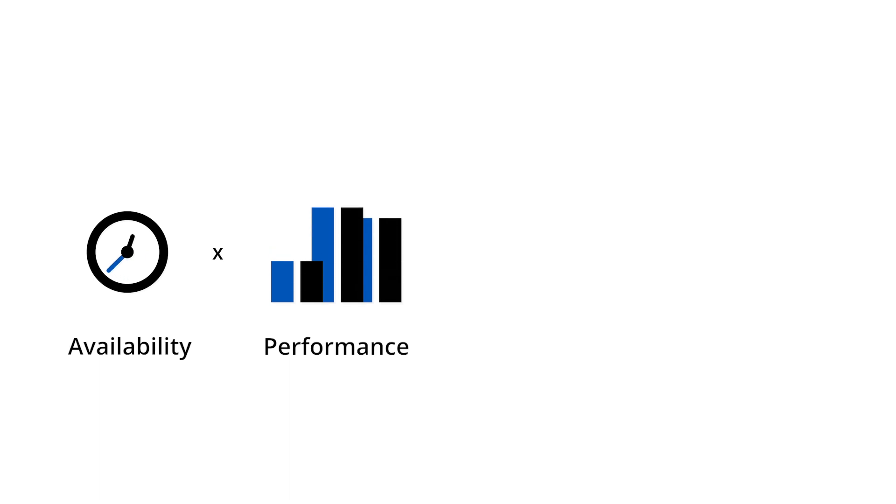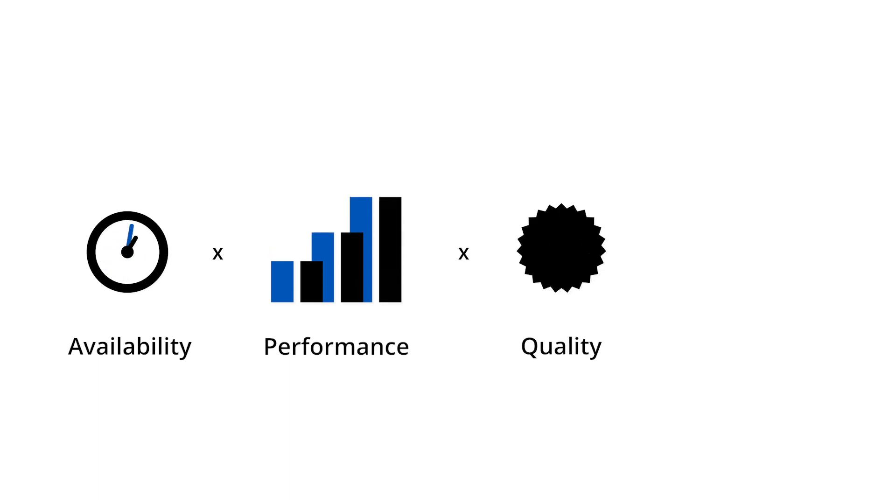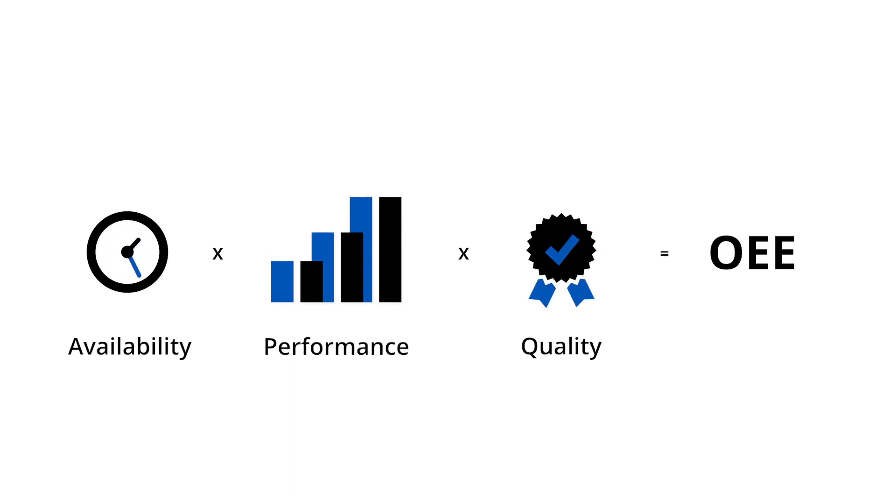Bringing all three of these factors together will produce an OEE score. Just multiply all three ratios together: availability times performance times quality equals OEE.